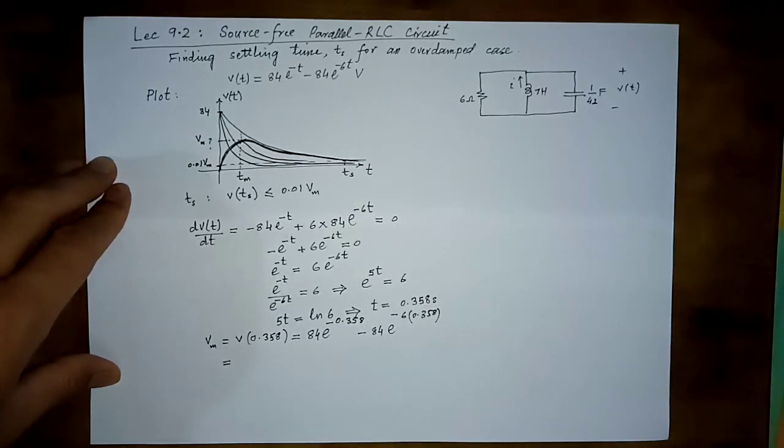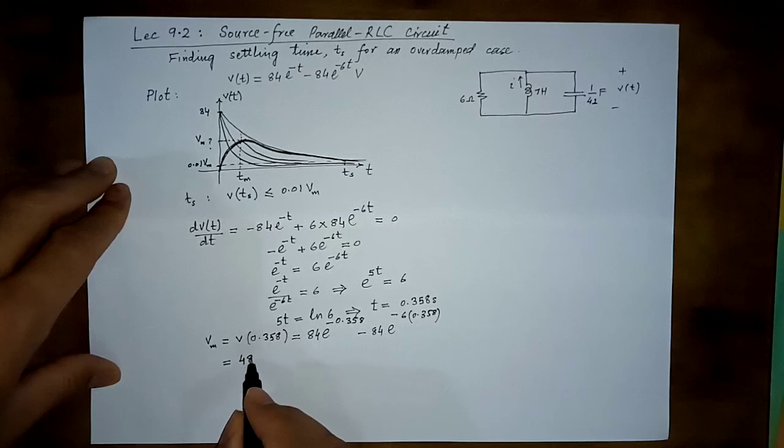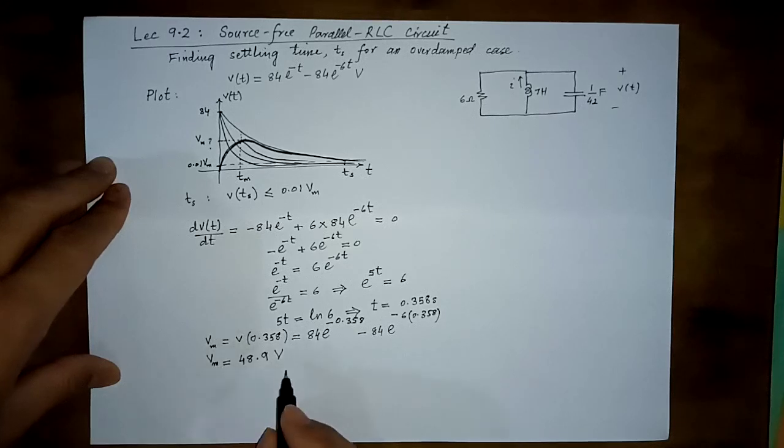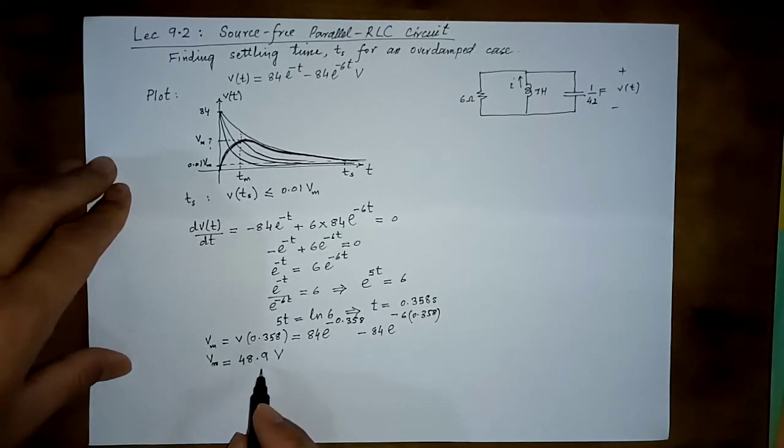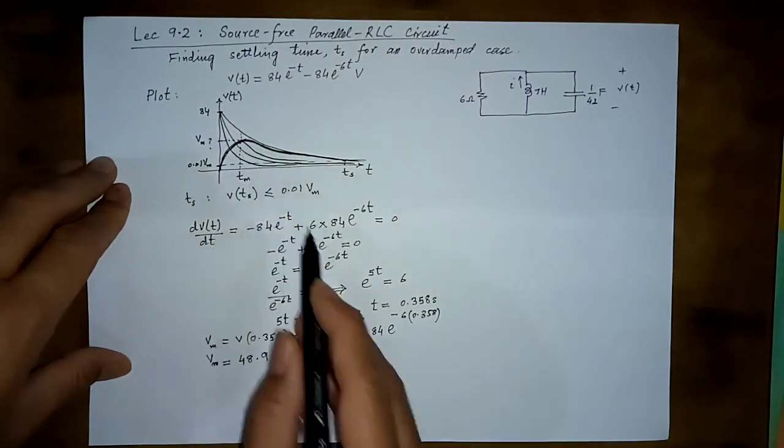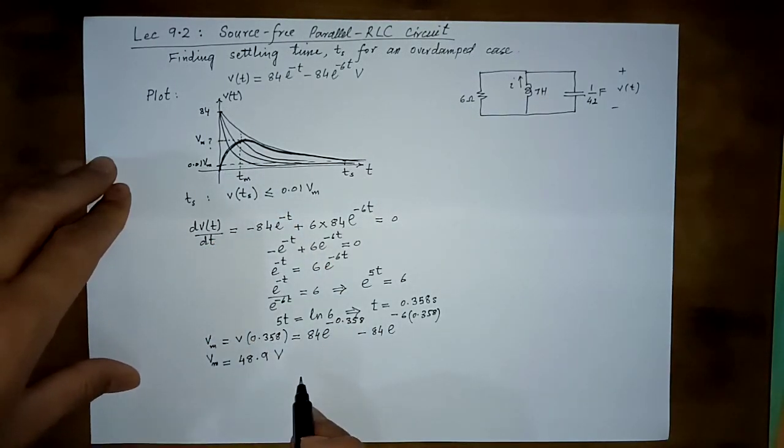By solving for this value using a calculator, obviously you can solve it much more easily. I have the liberty to use the book here and this is the maximum value I verified it. We are going to get the same value, 48.9 volts. So it rises to 48.9 volts and then it starts coming down.